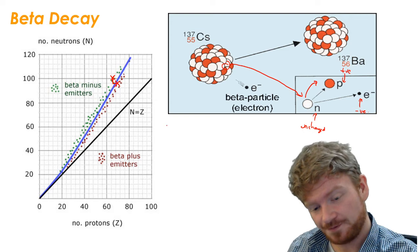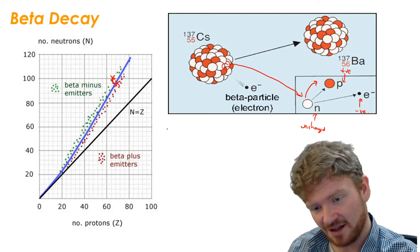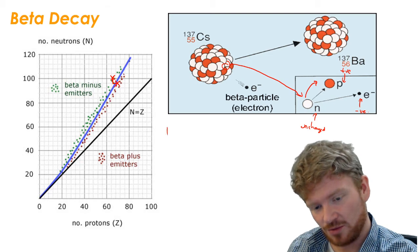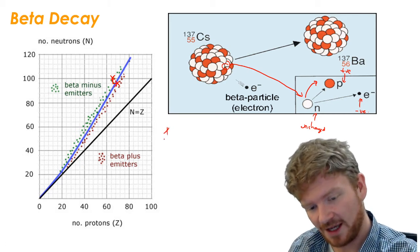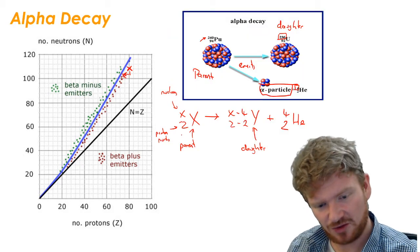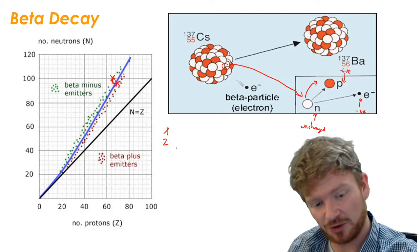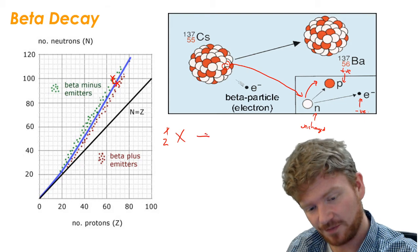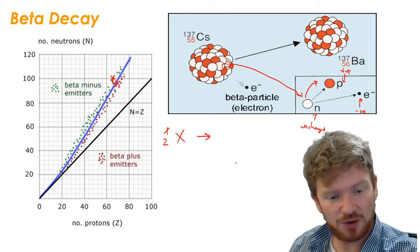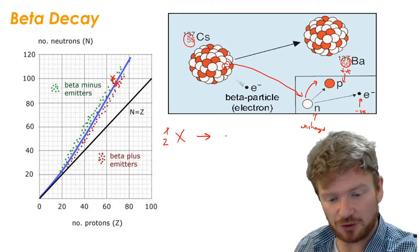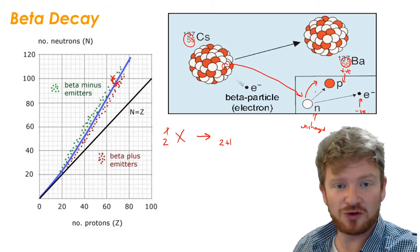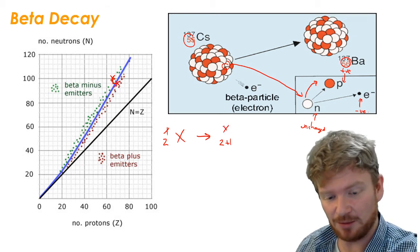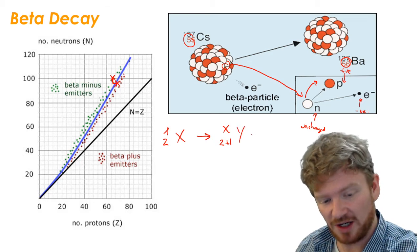In terms of the equation, we would write it as X, Z, X. So that was the starting numbers. You can see here, because I've gained an extra proton, the proton number will be Z plus 1. But a neutron sent to a proton, so the total number of protons and neutrons has stayed the same. So it's the same number here, and that will be Y for the daughter.